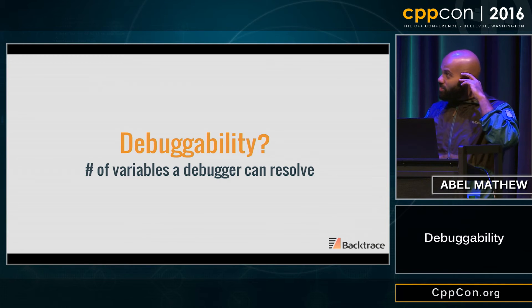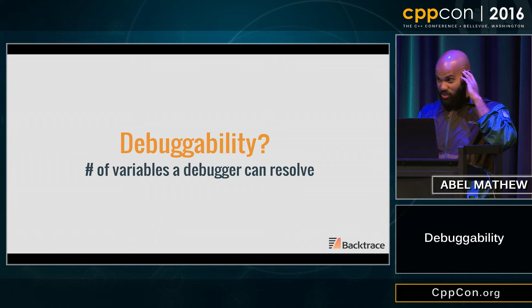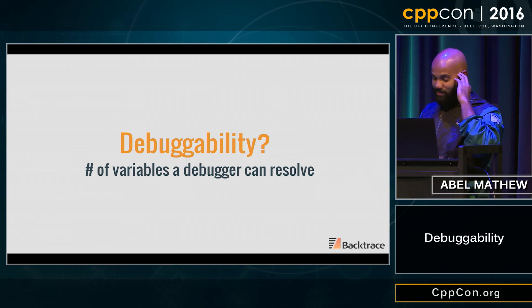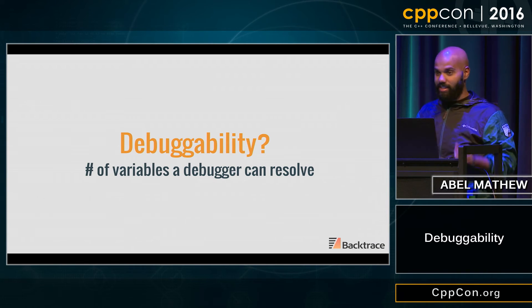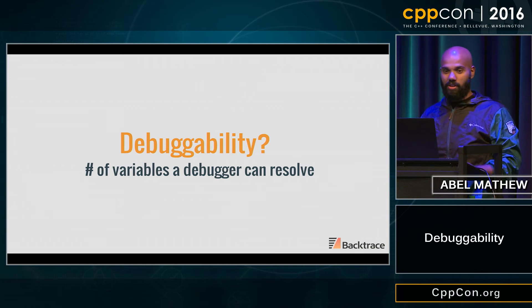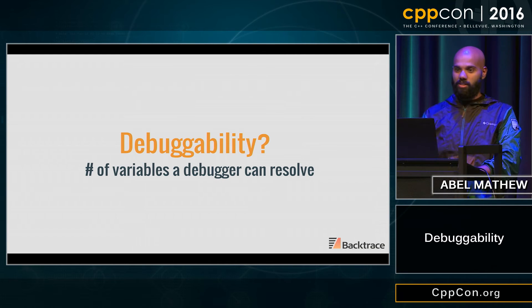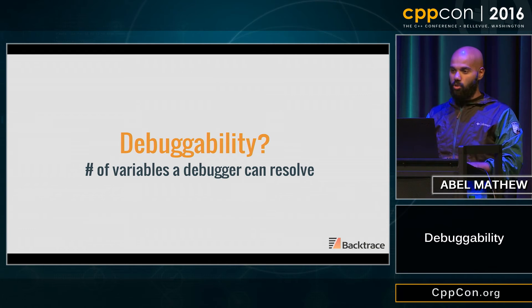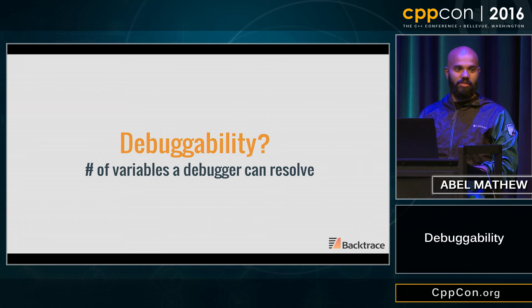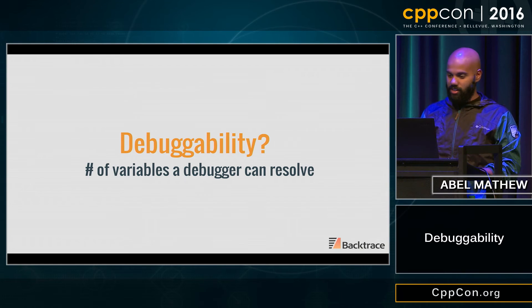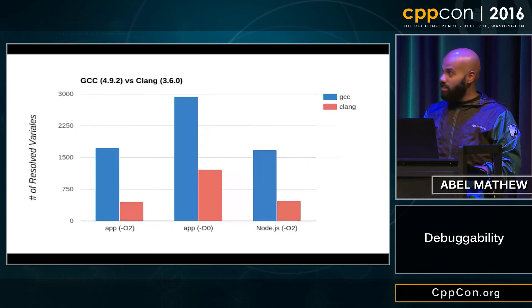So this is what I settled on — it's not really scientific, but basically I said: in a debugger, if I step through the backtrace, how many local variables can I actually resolve based on the compiler that I used?